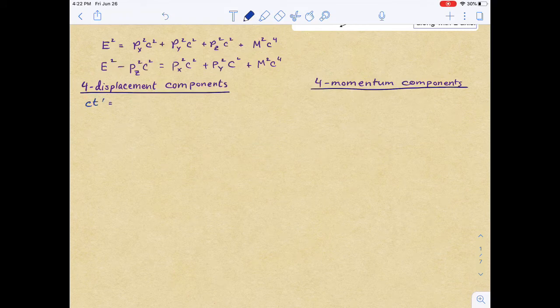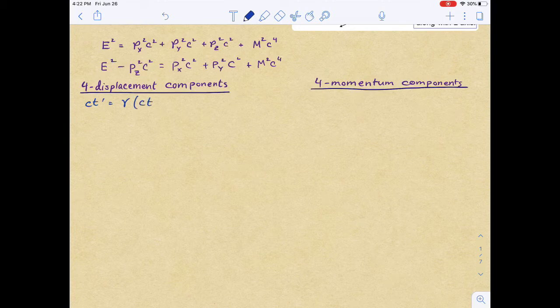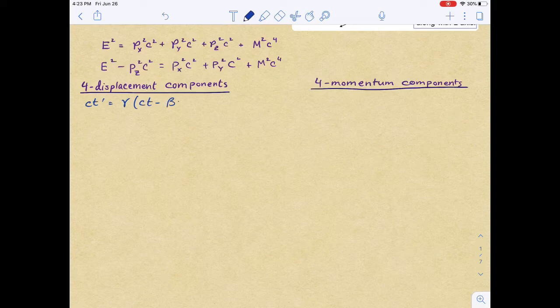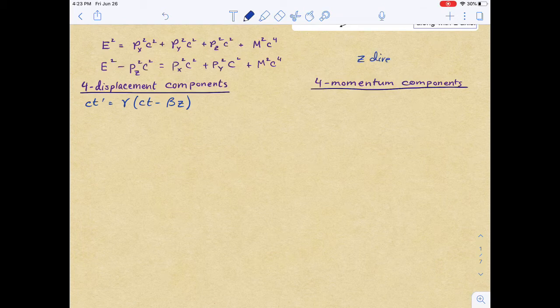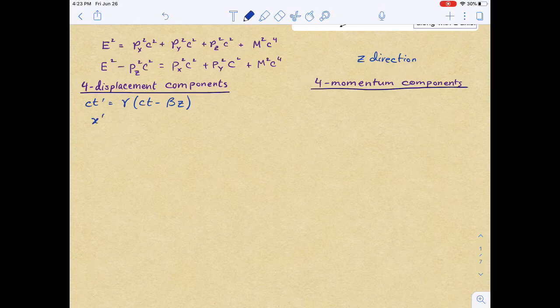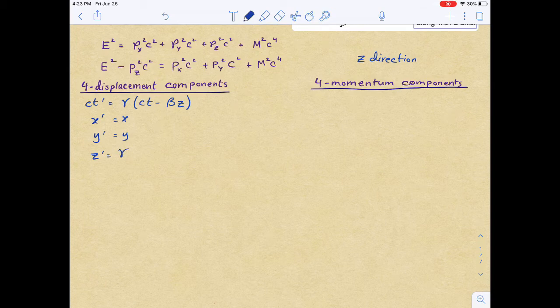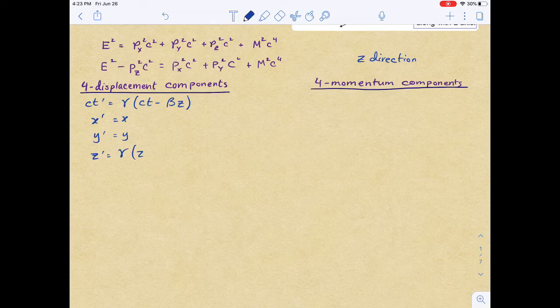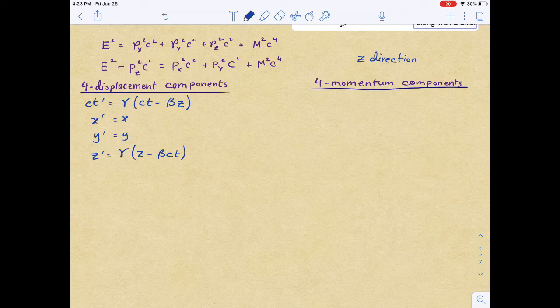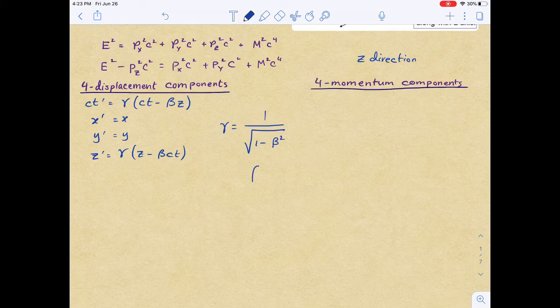The first one in the displacement component is ct prime, which we can relate with this Lorentz factor gamma times ct minus beta times z, because we are looking at the invariance in the z direction. In that case, x prime is simply x, y prime is simply y, but z prime will have this Lorentz factor gamma times z minus beta ct.